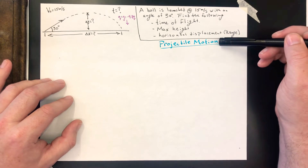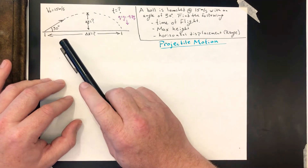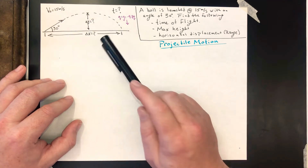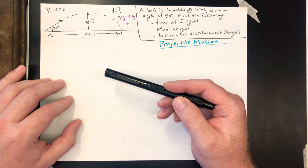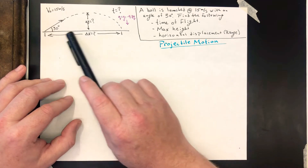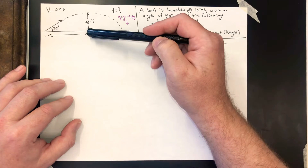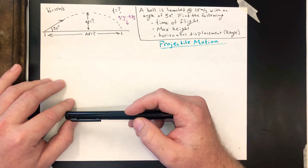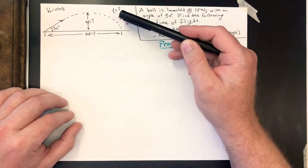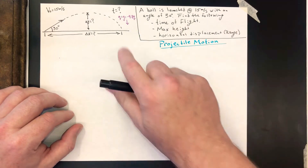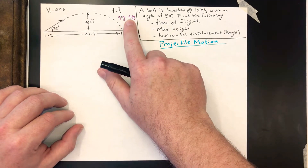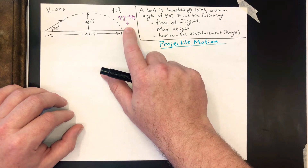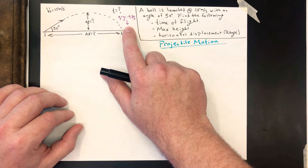This is a projectile motion problem and the first thing we've done is just draw out what we're looking at. We're saying we're launching something — if it's a projectile it's going to travel in this parabola type shape. We're trying to figure out the range, the max height, and also how long it's in the air. Our acceleration in the y direction is g, which we'll say is negative 9.8. By calling this negative, we're defining down to be negative and up to be positive.